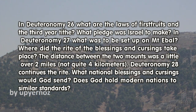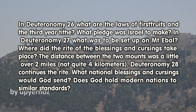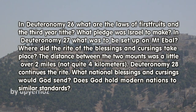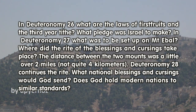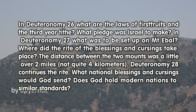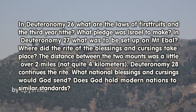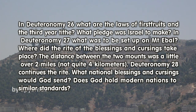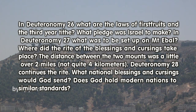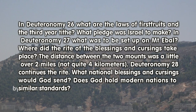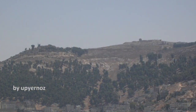The distance between the two mounts was a little over two miles, not quite four kilometers. Deuteronomy 28 continues the rite. What national blessings and cursings would God send? Does God hold modern nations to similar standards?